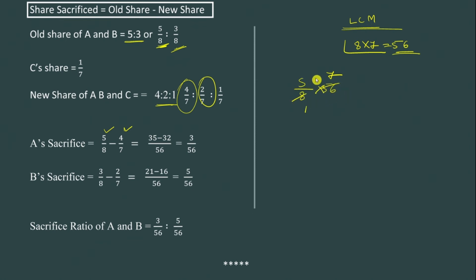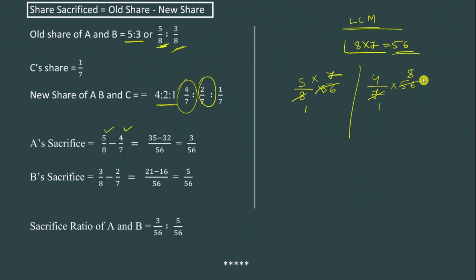Next, for A's new share: 4 by 7 into 56. Divide the numerator by 7 — 7 is 7, 7 is 8, giving 56. Multiply: 4 into 8 is 32. So A's sacrifice is 35 minus 32, which equals 3. The denominator is 56, so A's sacrifice is 3 by 56.